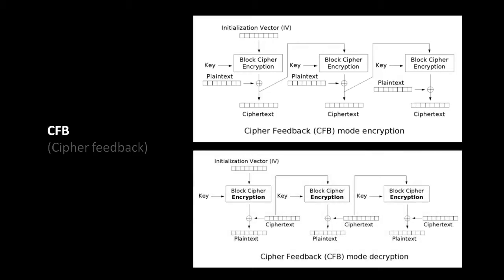To reverse this process and decrypt, we get each block of plaintext by taking the ciphertext of the previous block and actually encrypting it — not decrypting, encrypting it — and then XORing that with the ciphertext for that block. So, for example, to get our last block of plaintext, we take the previous block of ciphertext, encrypt it, and XOR with our last block of ciphertext. The special case is our first block, where we encrypt the initialization vector and XOR that against the first block of ciphertext. So the Cipher Feedback mode has the fairly cool property of using just an encryption cipher without any corresponding decryption cipher.